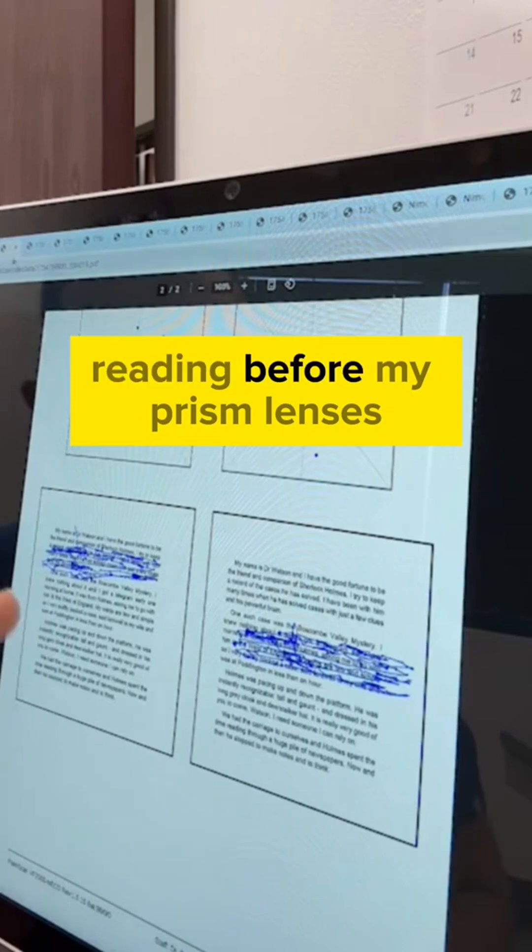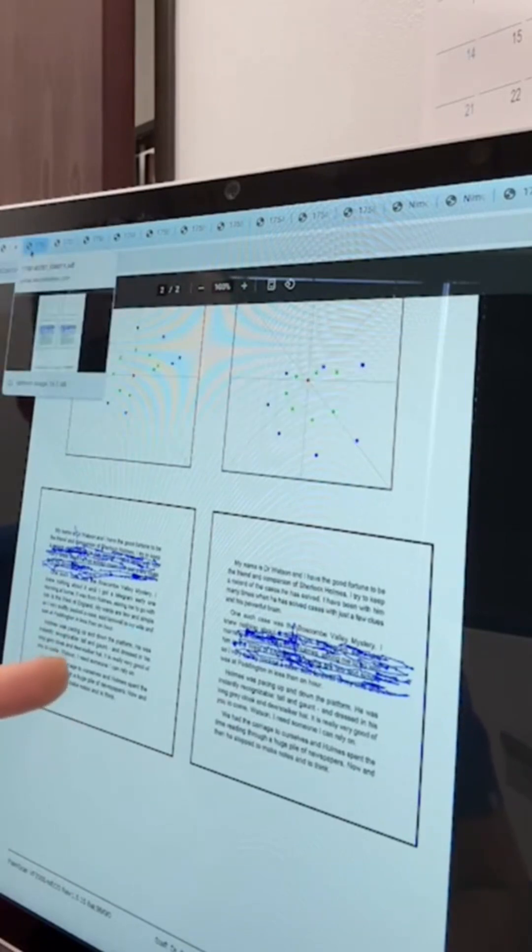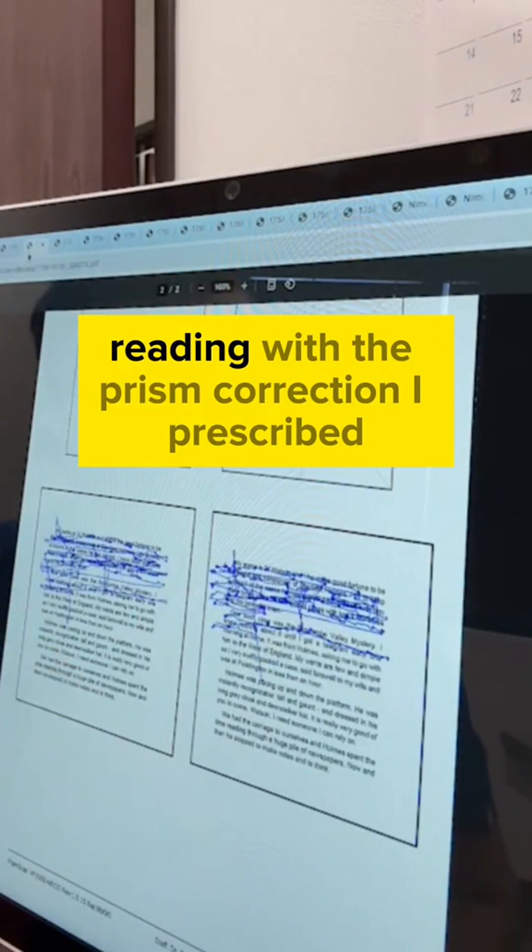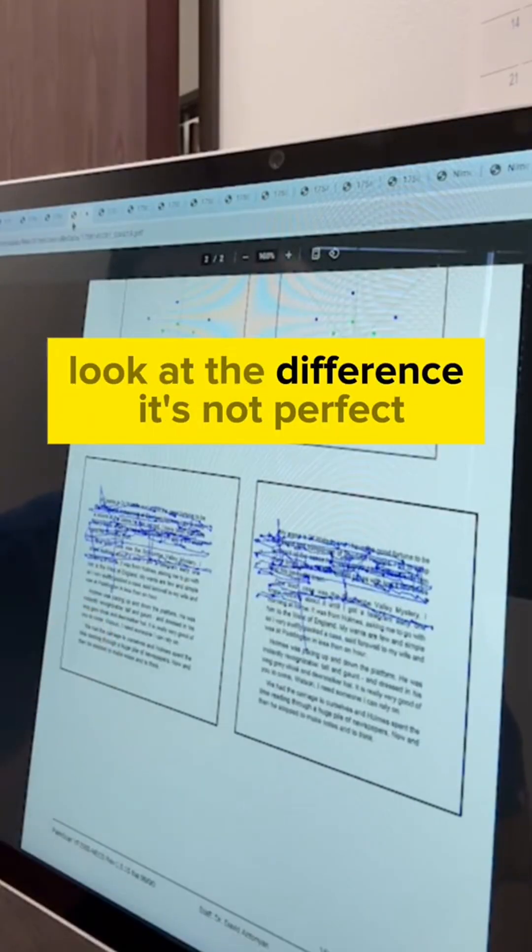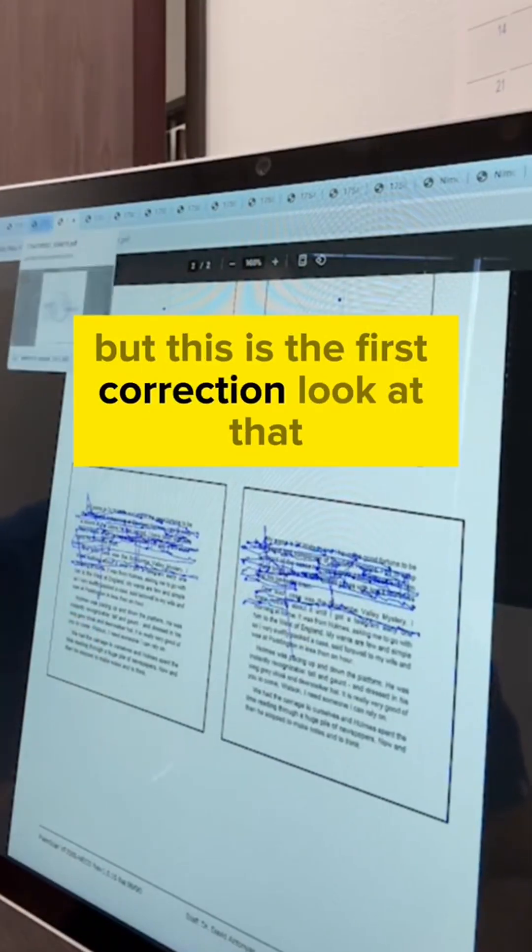Reading before my prism lenses. Reading with the prism correction I prescribed. Look at the difference. It's not perfect, but this is the first correction.